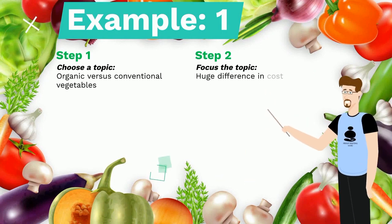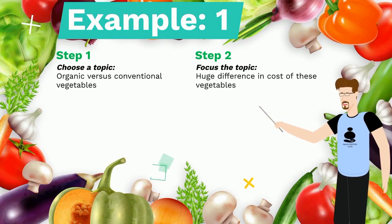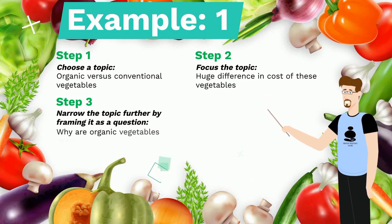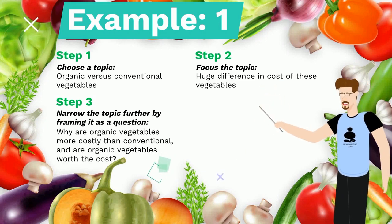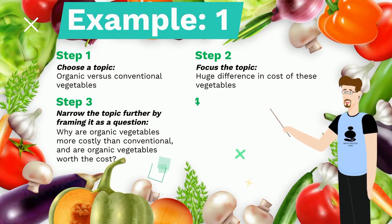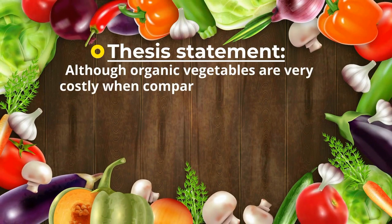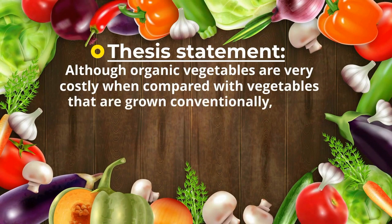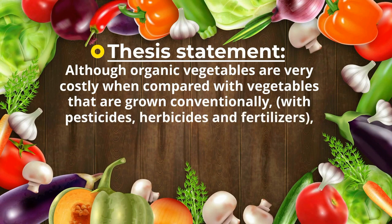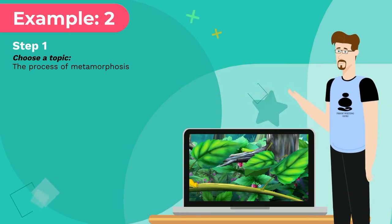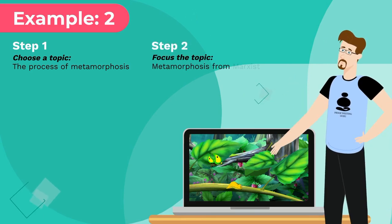Example one: Step one, choose a topic — organic versus conventional vegetables. Step two, focus the topic — huge difference in cost of these vegetables. Step three, narrow the topic further by framing it as a question: why are organic vegetables more costly than conventional, and are organic vegetables worth the cost? Step four, answer the question. Thesis statement: although organic vegetables are very costly when compared with vegetables grown conventionally with pesticides, herbicides, and fertilizers, the nutritional quality of both vegetables is about the same.